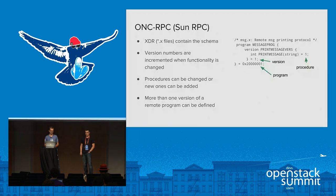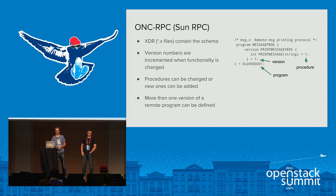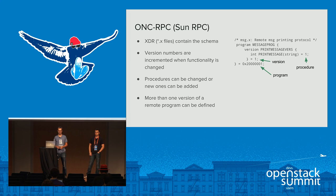One of the first was Sun RPC, developed by Sun in the 1980s as part of the NFS project. In Sun RPC, you define extra files which contain the schema. Version numbers are incremented when functionalities change in the remote program, and existing procedures can be changed or new ones can be added.